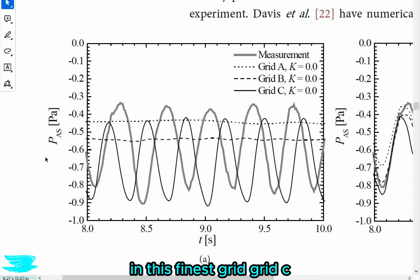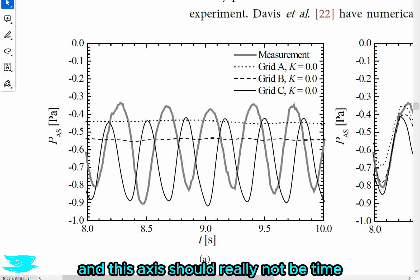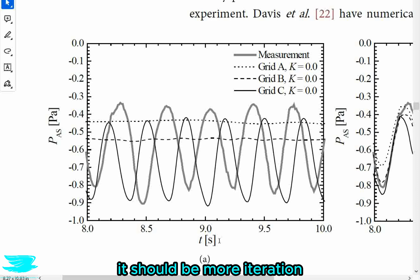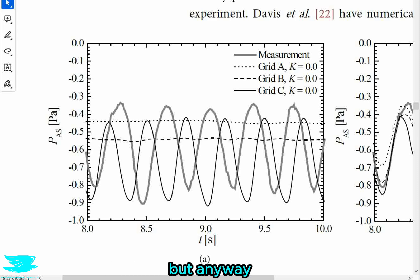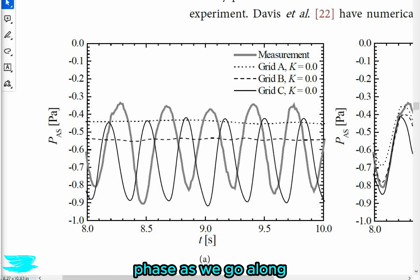So that is why we are getting here in this finest grid, grid C, this fluctuating unsteady phenomenon effectively. And this z-axis should really not be time, it should be more iteration. That would make much more sense for this steady state approach. But anyway, while we can get this general phenomenon, as you can see, it is out of phase with experiments. And that is because it can't actually do this transient phenomenon, but this transient phenomenon still bleeds through in this pseudo timestep kind of thing.